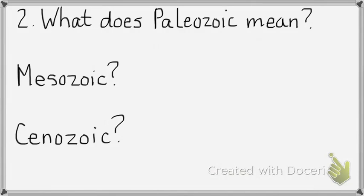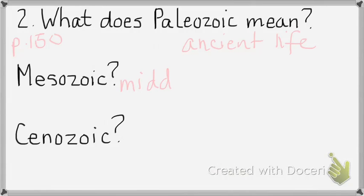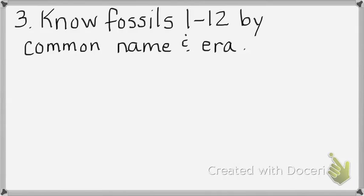In our lab manual, page 150, you'll find the geologic eras. Paleozoic means ancient life. Mesozoic means middle life. Cenozoic means recent life. Fossils 1 through 12 will be on your lab test, and you have to know their common name and their era. There's a PowerPoint on Blackboard under course content with all the pictures of the fossils.